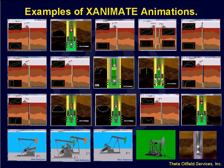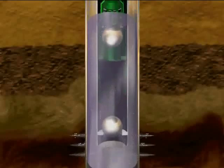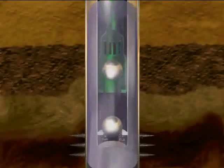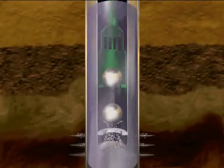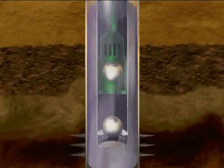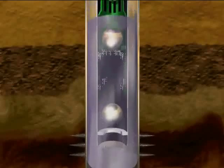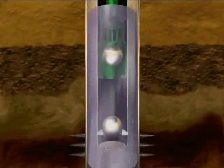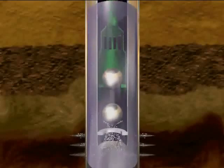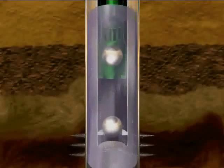This is an interesting one — a three-dimensional downhole pump animation. Here are the perforations. You can see gas coming out of solution on the upstroke. The fluid level here moves down on the upstroke as fluid is entering the pump, and then it goes back to normal on the downstroke as fluid continues to come out of the perforations.